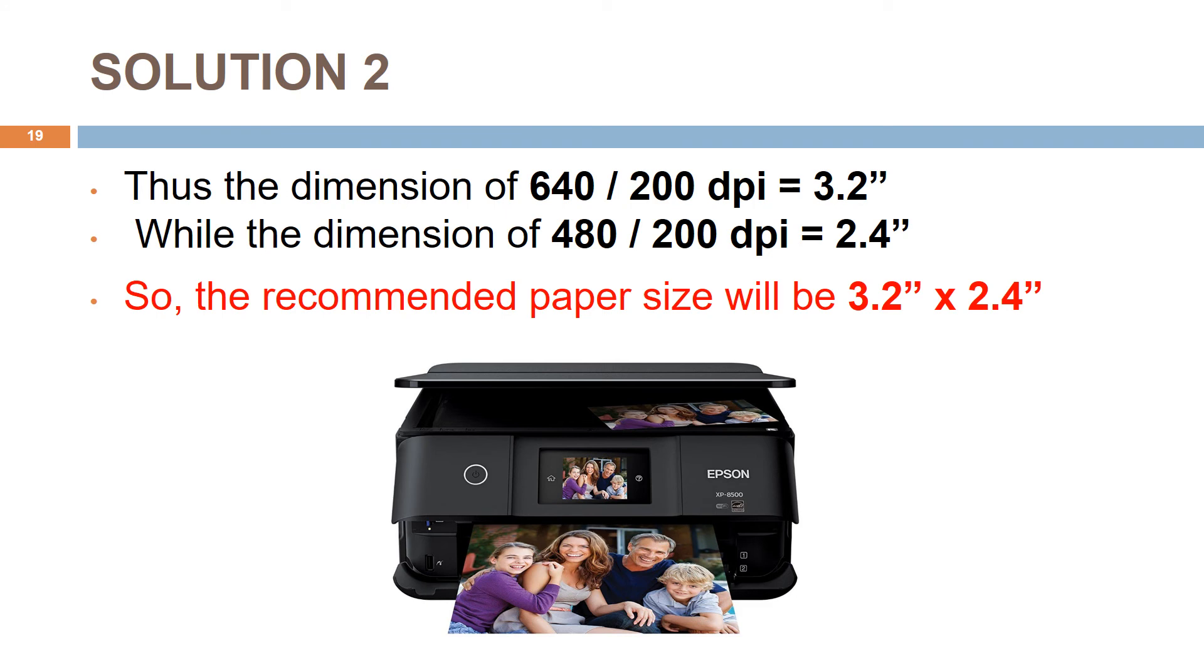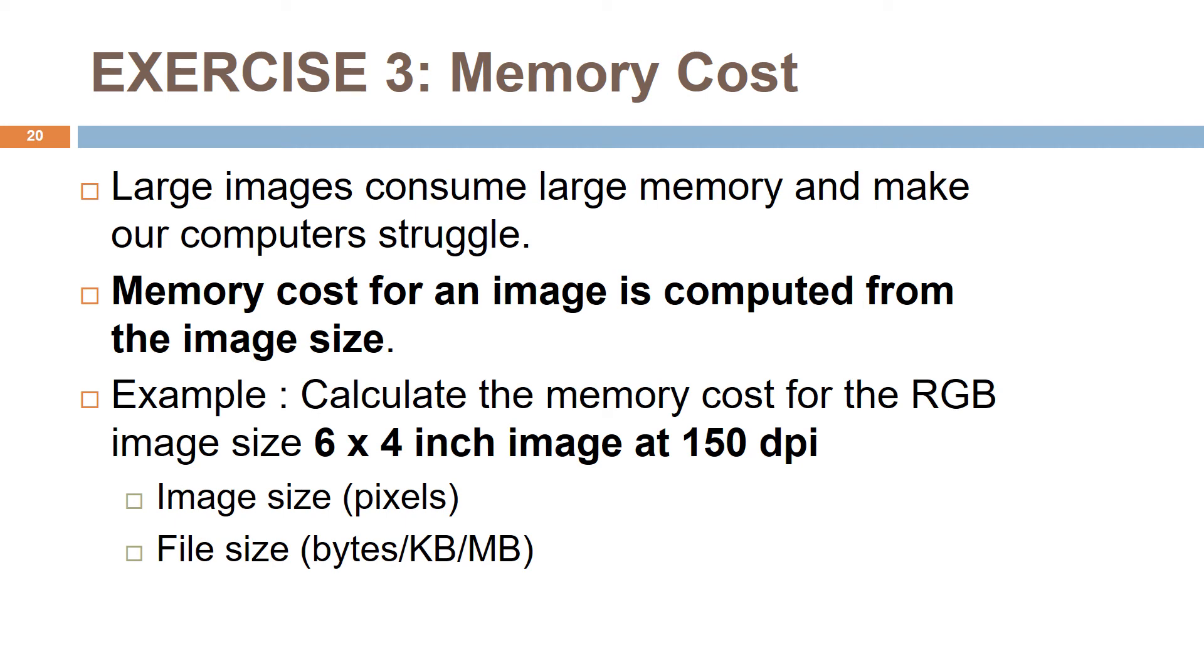So how much storage in your memory cost for one single image that you store? The larger image will consume large memory space. This is what we call memory cost. Memory cost is computed based on the image size. For this example, what is the memory cost for 6 x 4 inch image at 150 PPI resolution? First, you must determine the image size in pixels. The image size in pixels will be the printed size image with the DPI resolution: 6 x 150 DPI by 4 x 150 DPI. So you get the image size is 900 x 600 pixels.